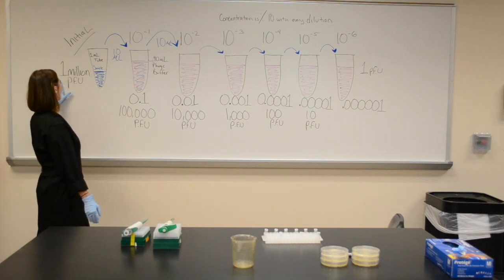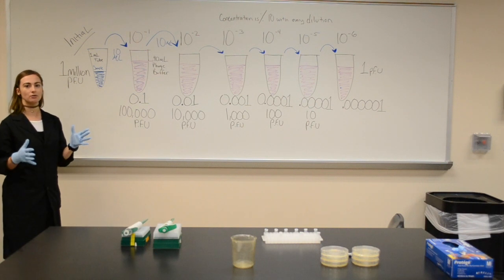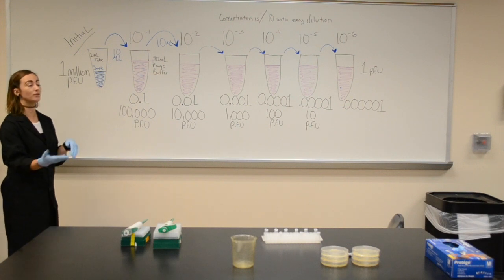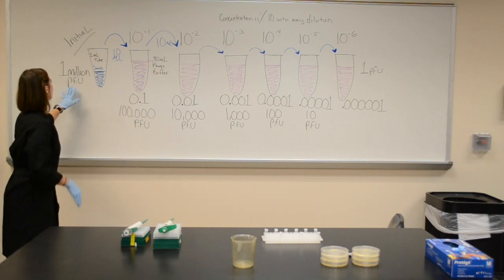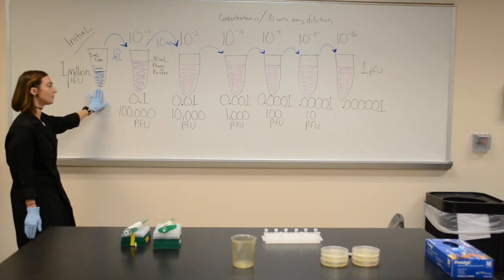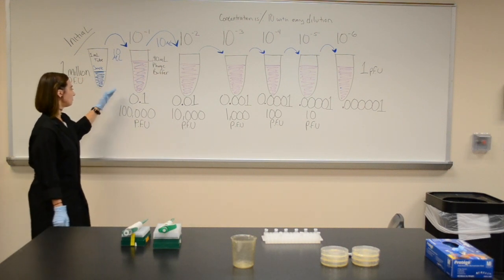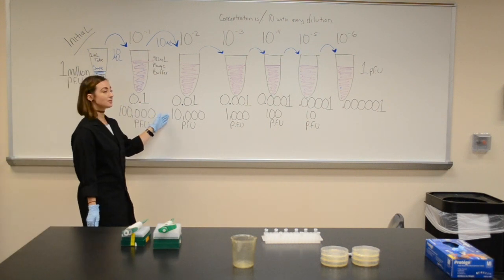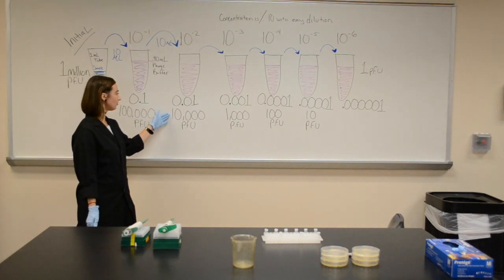Where you might have started off with 1 million PFU - plaque forming units, sorry I forgot that for a second - plaque forming units are what we're going to call the bacteriophage that actually produce a mark on the plate, which is what we'll be looking for. So 1 million plaque forming units which could be in the initial tube, divided by 10 would be 100,000.